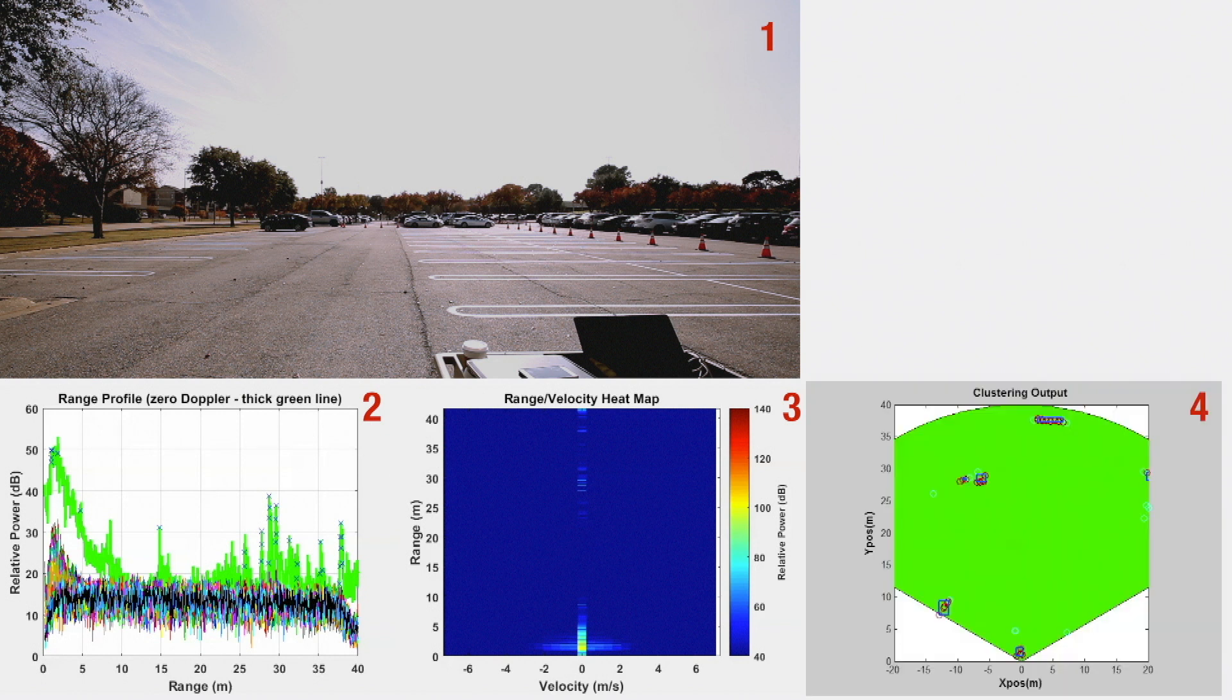Plot 4 shows the detection and clustering results. The red circles are the detected points corresponding to the targets seen by the radar. Each rectangle is a cluster of points belonging to the same objects.